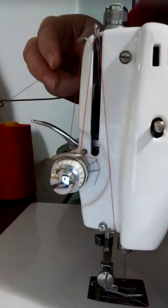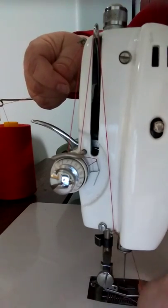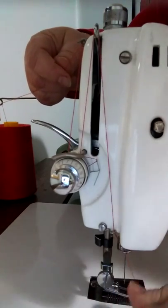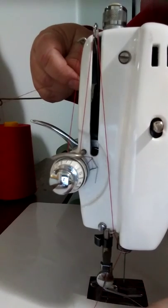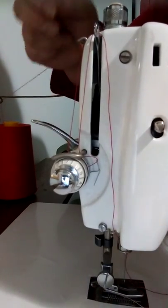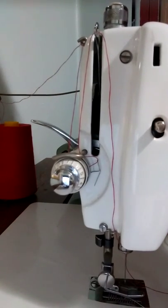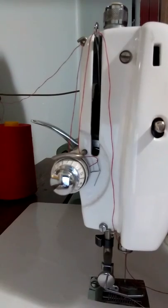Then you hook it through the little hook next to your needle and then you thread it in through your needle. And that is how you thread an old machine with the tension on the back.